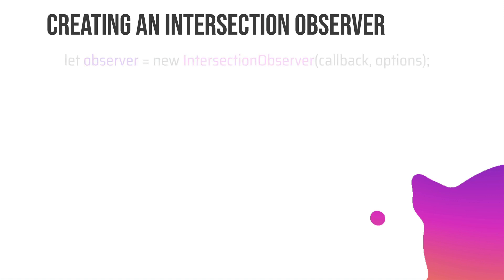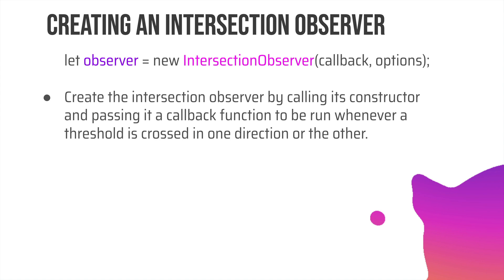To create an intersection observer, you create a variable called observer and instantiate the IntersectionObserver. It takes two parameters: the callback and the options. We create it by calling its constructor and passing it the callback function to be run whenever the threshold is crossed in one direction or the other. Each time the threshold is crossed, that callback function will be called. In our case we want to call the load more function so it makes an Ajax call to WordPress and appends more posts.